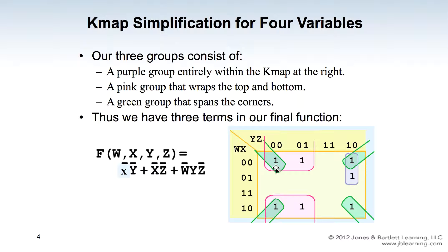Once you identify the groups, represent each group by its corresponding variables. For the first purple group, W stays at zero so W is kept, but X changes from zero to one — so X is dropped. The rule is: whenever a variable's value changes while grouping, that variable is dropped. Y and Z remain the same — one and zero — so this group is represented by W-not, Y, Z-not.